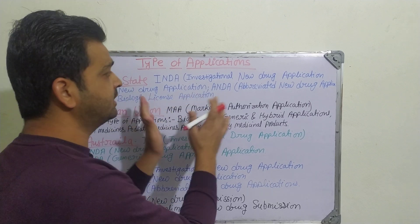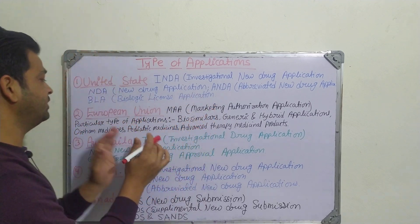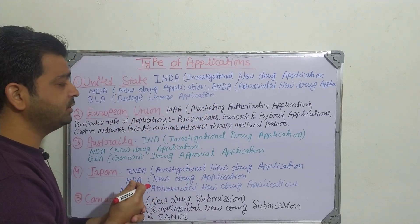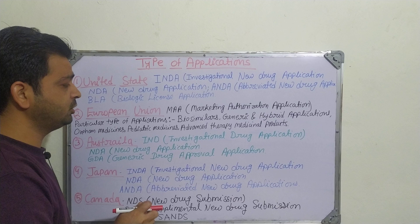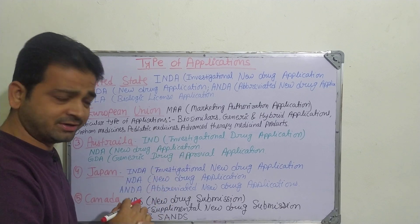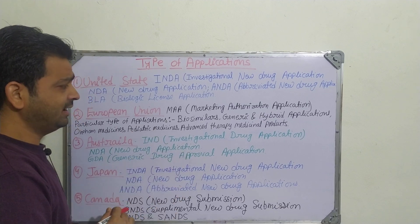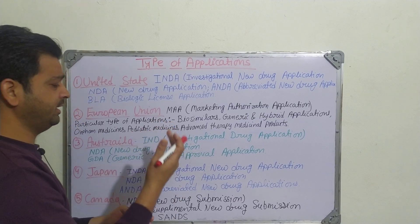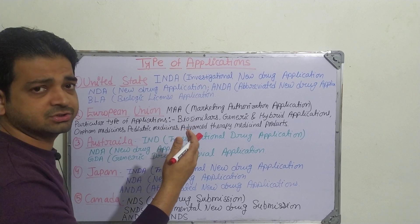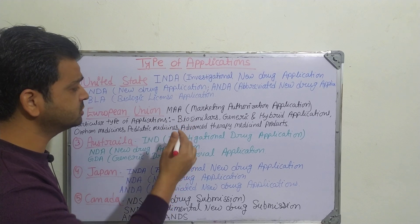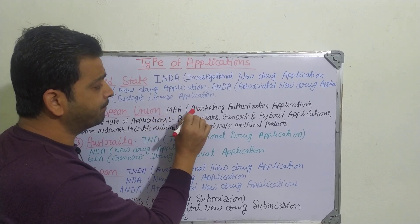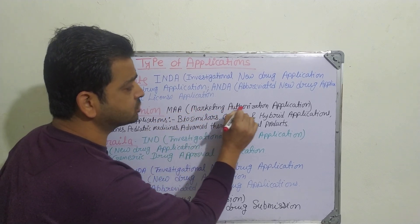Now coming to the European Union — the 27 member countries including Germany, Italy, and others. In the EU, the primary application type is the MAA — Marketing Authorization Application. To get marketing authorization or a marketing license, we need to file the MAA.